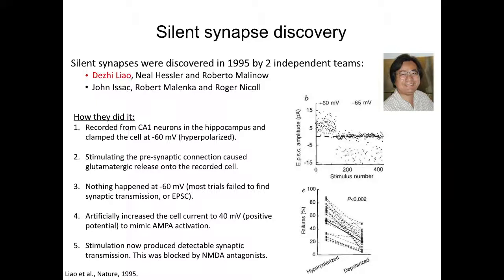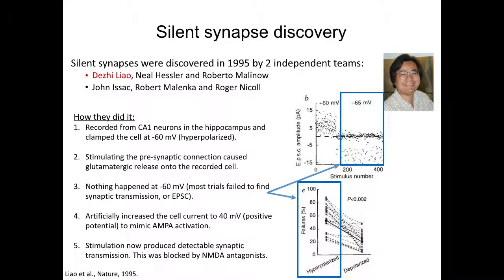So how did they do it? First, they recorded from CA1 neurons in the hippocampus and clamped the cell at minus 60 millivolts in a hyperpolarized state. Second, they stimulated the presynaptic connection, causing glutamatergic release onto the recording cell. Nothing happened at minus 60 millivolts — most trials failed to find any synaptic transmission, or EPSCs (excitatory postsynaptic currents). You'll see here in the blue boxes that this did not produce any EPSC amplitude.